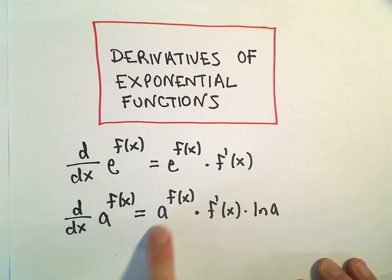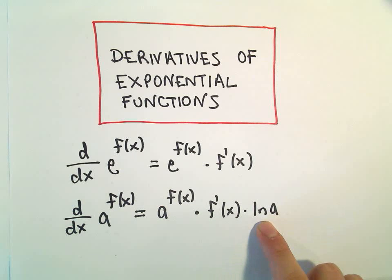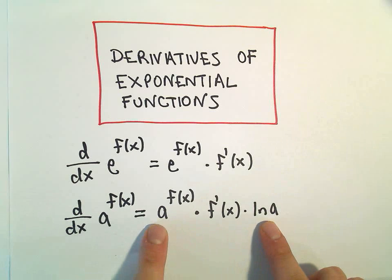the derivative just repeats itself, a to the f of x. We still have to do the chain rule, but then we tack on the natural logarithm of the base a.